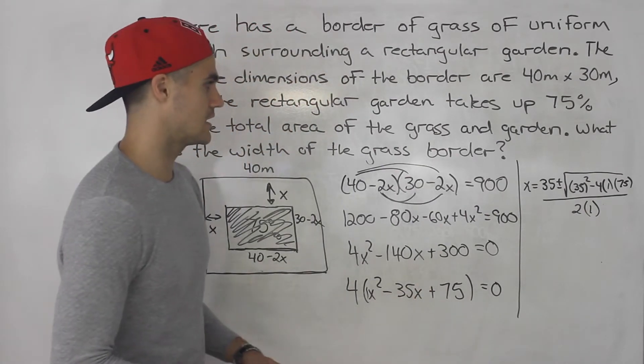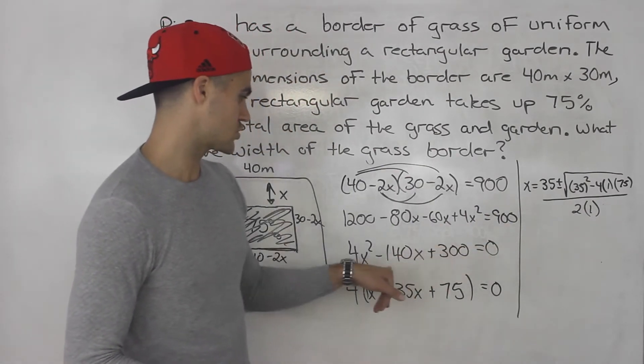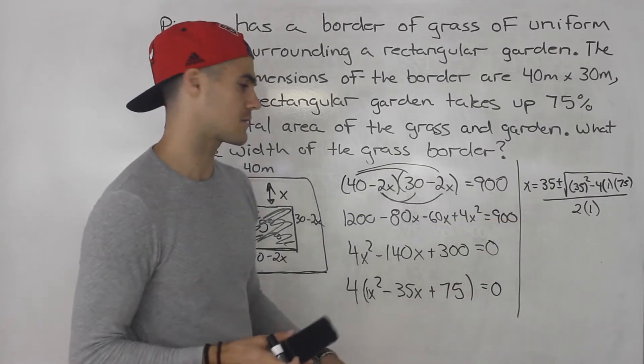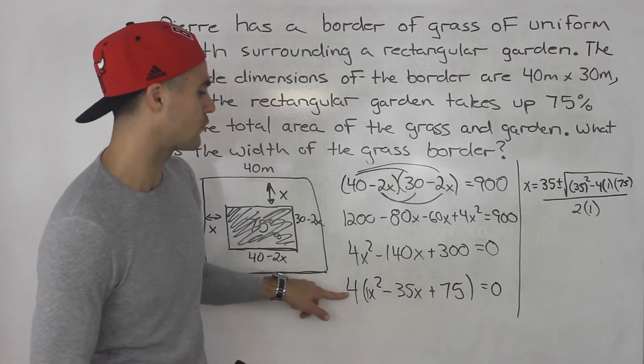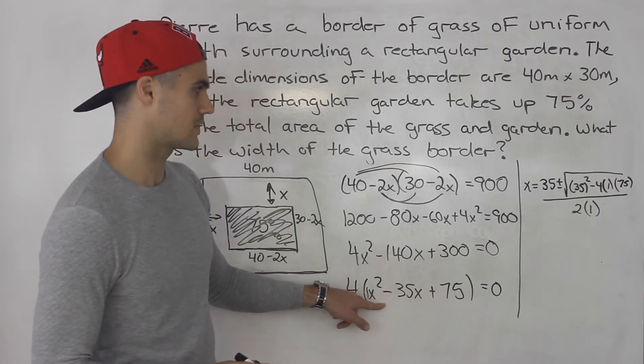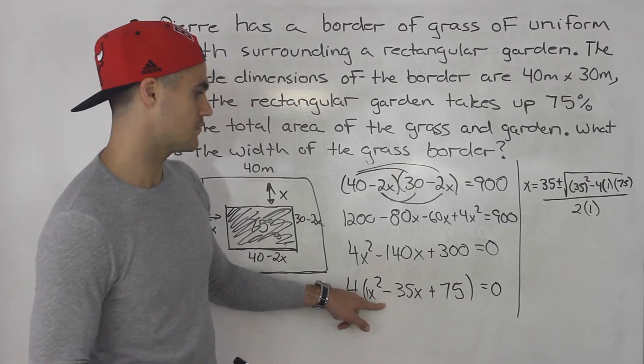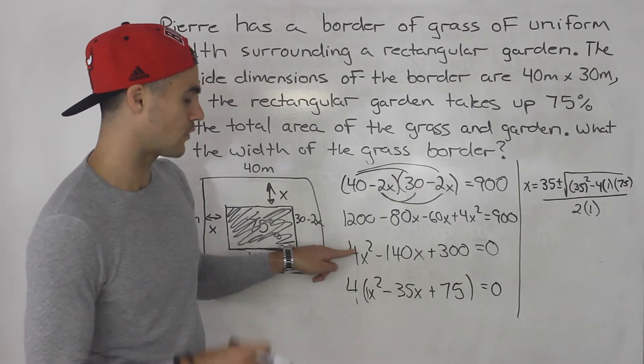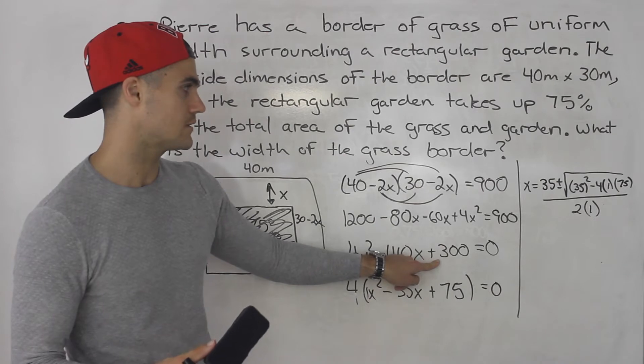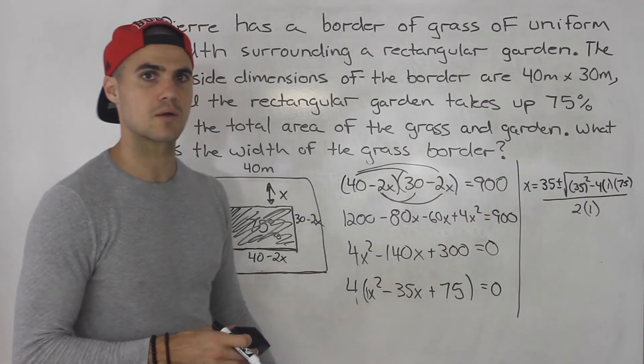Now another thing I want to mention is you could have just took this quadratic here and put it in the quadratic formula. You're going to get the same solutions. But I factored out a 4 first and now I'm just taking this quadratic and solving for it. But if you input an a value of 4, a b value of negative 140, a c value of 300, you'd get the same solutions that we're going to get.